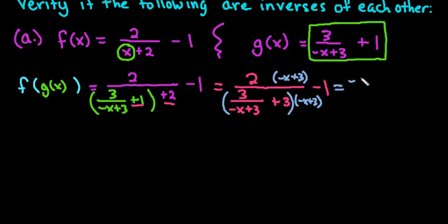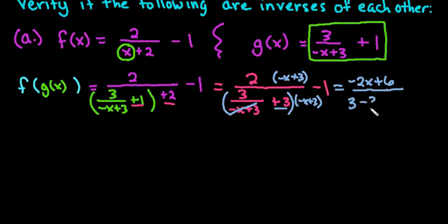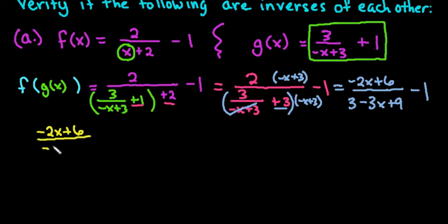The top becomes negative 2x plus 6. On the bottom, the first part cancels out leaving just 3, but I have to distribute into the 3, giving me 3 minus 3x plus 9. Don't forget we still have the minus 1 on the outside. So I'm left with negative 2x plus 6 over negative 3x plus 12, minus 1.